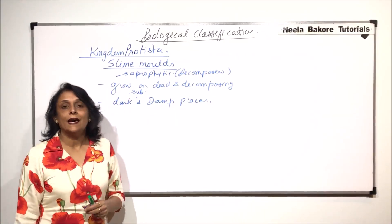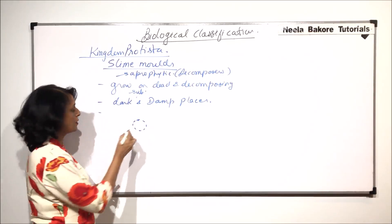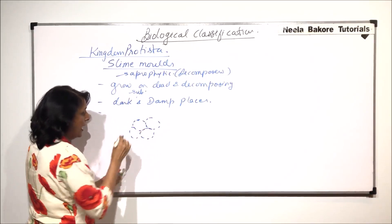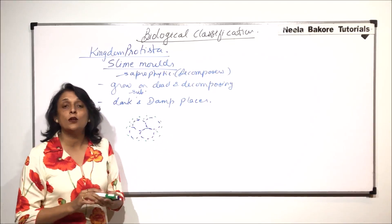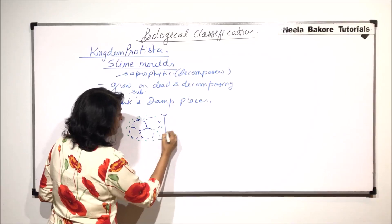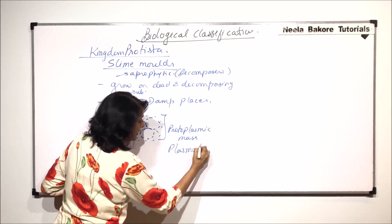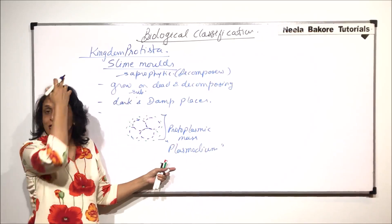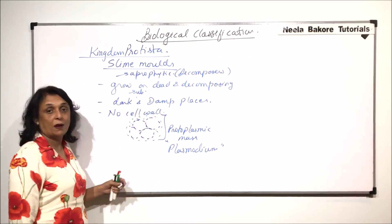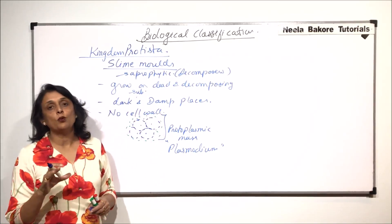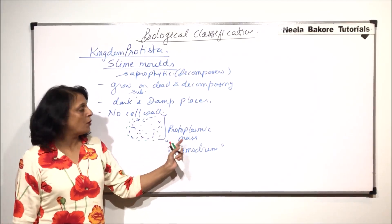These organisms are uninucleate and most of these cells remain together. Each cell of the slime mold secretes a mucilaginous sheath around itself, and because of this mucilaginous sheath, it looks like a protoplasmic mass. This protoplasmic mass is known as plasmodium, and plasmodium is what we call the true slime molds. They do not have a cell wall — only the plasma membrane is present. Each one has one nucleus, and the protoplasmic content also fuses, so it appears as a multi-nucleated protoplasmic mass.